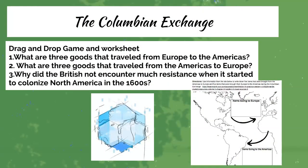We're then going to be looking at the Colombian exchange and studying aspects of it in terms of its purpose and the types of goods that were exchanged. This will be done through a drag-and-drop game and worksheet where we'll look at the goods that traveled from Europe to the Americas, from the Americas to Europe, and why there wasn't much resistance when colonization of North America first started in the 1600s.